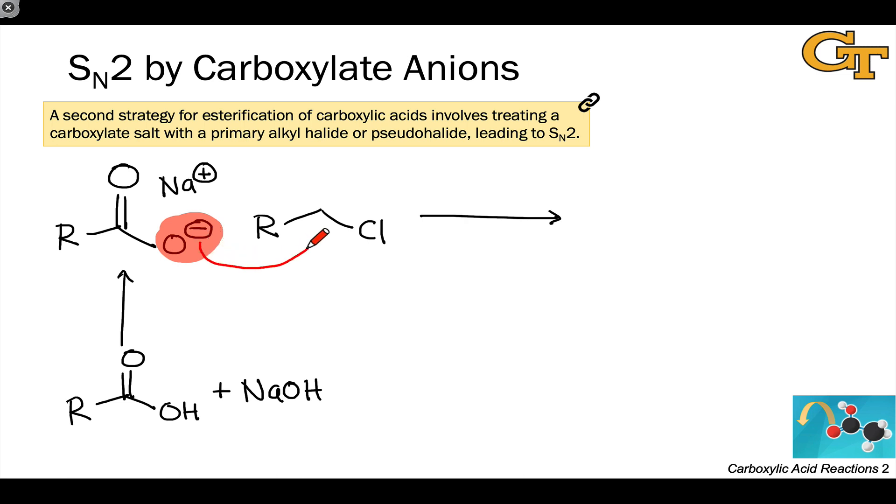The carboxylate is a nucleophile, and using an alkyl halide or pseudohalide, here it's a chloride, we can install a primary alkyl group. And this is a nice, straightforward way to make esters.